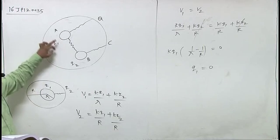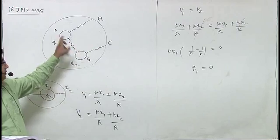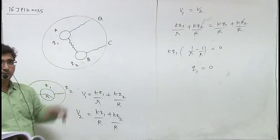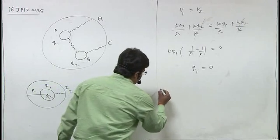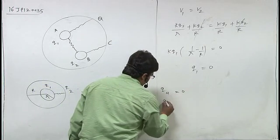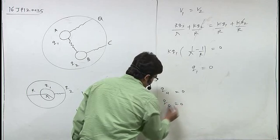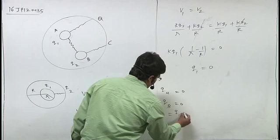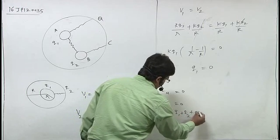The total charge is Q1 plus Q2 plus Q, so the charges on A, B, and C will be: QA equals 0, QB equals 0, and QC equals Q1 plus Q2 plus Q.